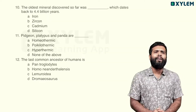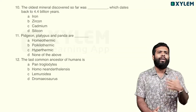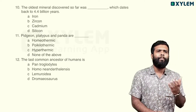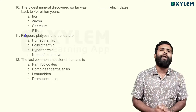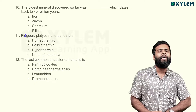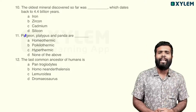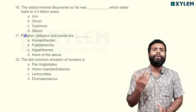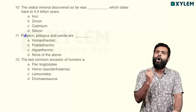Pigeon, Platypus and Panda are — they are in the mammalian and bird categories. Platypus and Panda are mammals; Pigeon is a bird. All of these animals are homeothermic — they can maintain their body temperature. So option A — homeothermic — is the right answer.